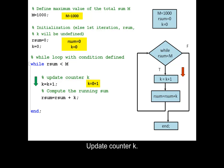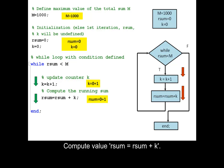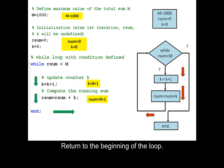Update counter k. Compute value: rsum equals rsum plus k. Return to the beginning of the loop.